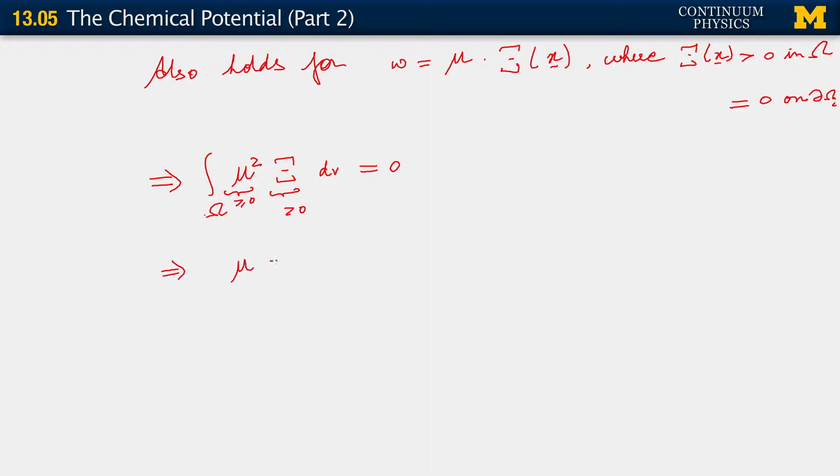mu, which we've decided is the derivative of chi with respect to c, if this is equal to 0 in omega. This is the condition for chemical equilibrium.